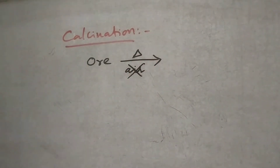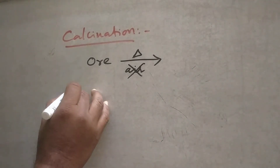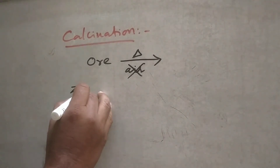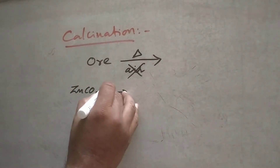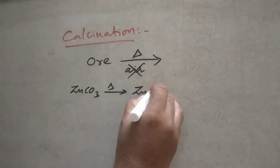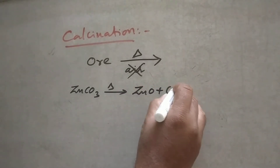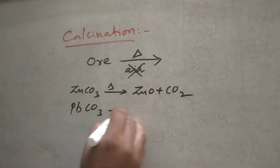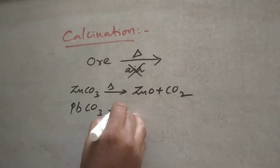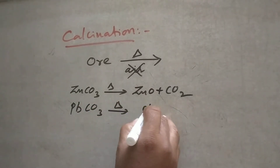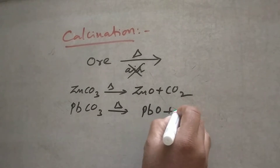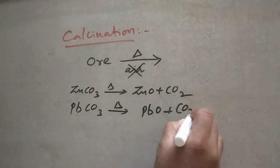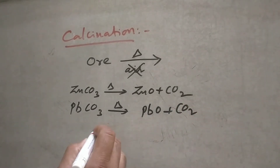Heating without air — that is called calcination. For example, suppose zinc carbonate is taken and heated. You get zinc oxide plus carbon dioxide. Similarly, suppose lead carbonate is taken and heated, you will get lead oxide plus carbon dioxide.